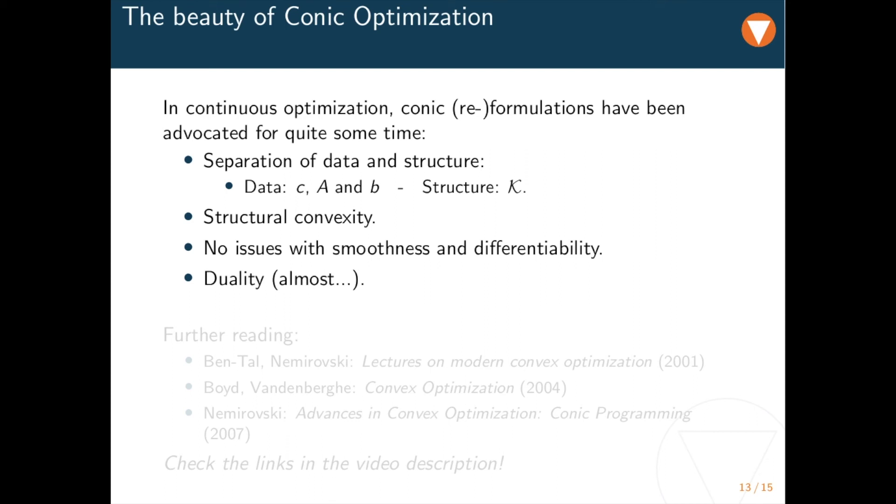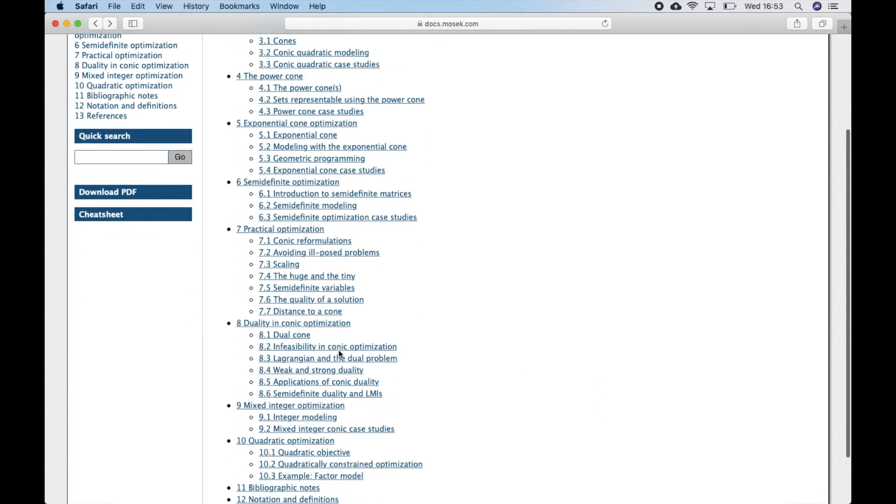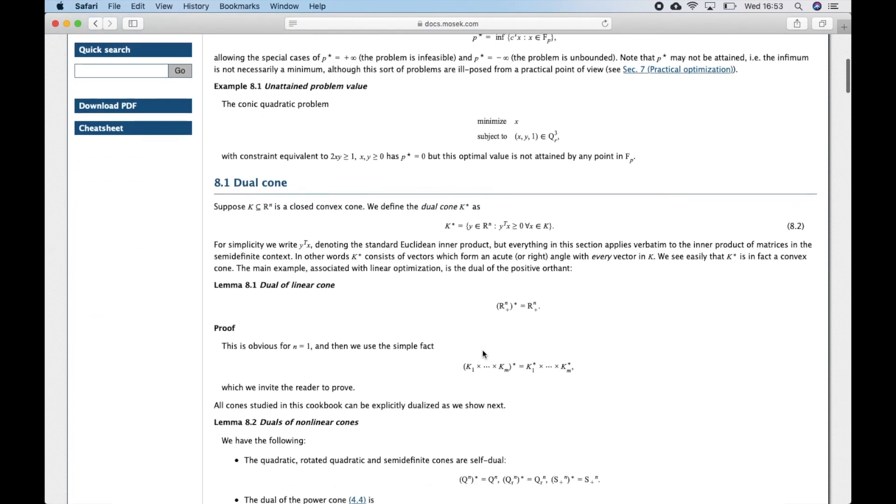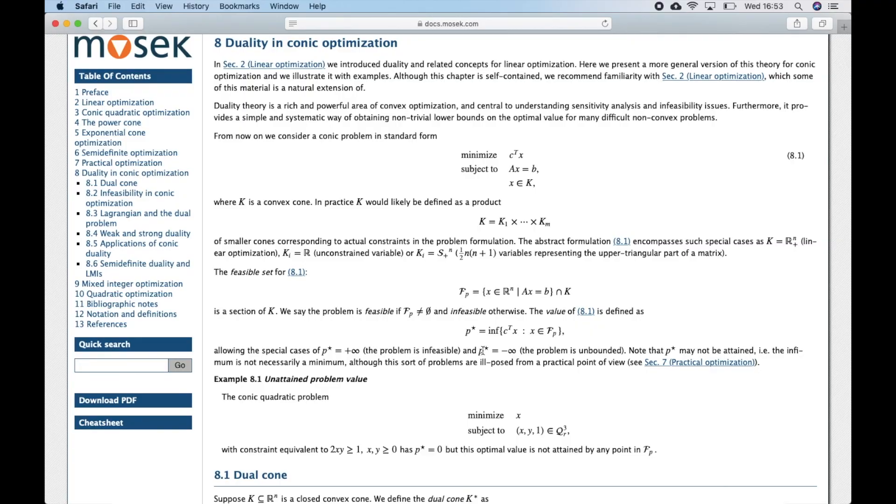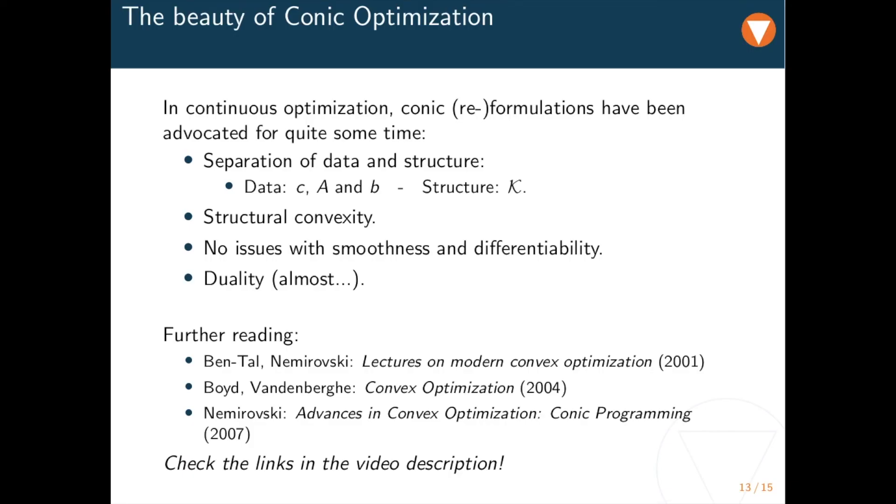Deciding whether a problem is convex or not may be hard in general, but here we are convex by construction. Also, there are no issues with smoothness or differentiability of the involved functions. Finally you might remember from a linear programming class that LP is one of the cases where Lagrangian duality can be simplified to an explicit form. Well, conic optimization is another such case. And although there are tiny bits of duality theory that do not carry over from the linear case, conic duality can have a decisive impact on our ability to solve these problems. For more details on conic duality, we refer to section 8 of the modeling cookbook, or for discussions of and hints on the advantages of conic programming to this non-exhaustive literature list.